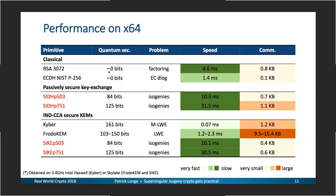Let me get to the timings — the practical part. We have implementations of SIDH and SIKE at two security levels. After improving P751, the numbers for that security level are close to 30 milliseconds, a nice improvement over the 60 milliseconds we had before and the hundreds of milliseconds from a few years ago. Especially notable is that the P503 parameter set runs in about 10 milliseconds, arguably making these schemes practical for many applications.